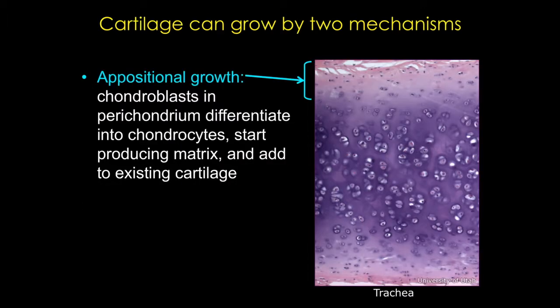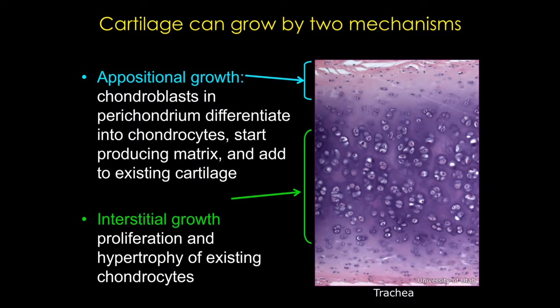Cartilage can grow by two basic mechanisms. Appositional growth, where chondroblasts from the perichondrium divide and differentiate into chondrocytes, is predominantly a developmental mechanism. The second type is interstitial growth, where existing chondrocytes divide and hypertrophy. This type of growth is responsible for lengthening of our long bones and maintaining our articular cartilage.